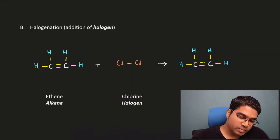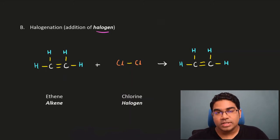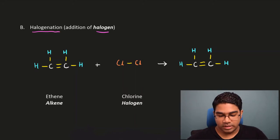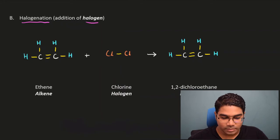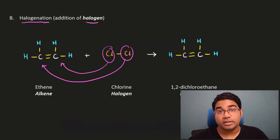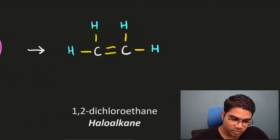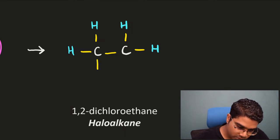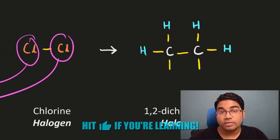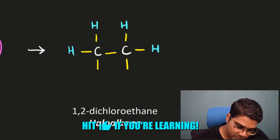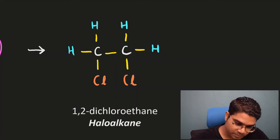The second addition reaction is addition of halogen. When we add halogen, the process is called halogenation. Starting with ethene again — when we add chlorine as the halogen — the process is the same: we break the C-C double bond leaving just a C-C single bond, add two new single bonds, and add the two chlorine atoms, one on each carbon.